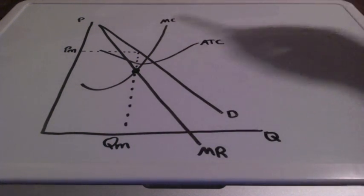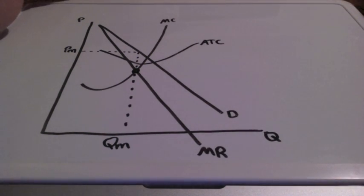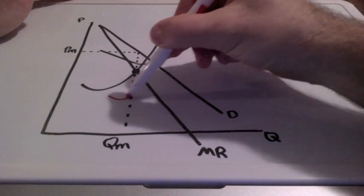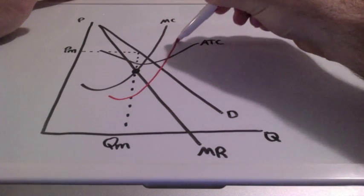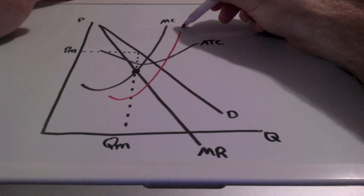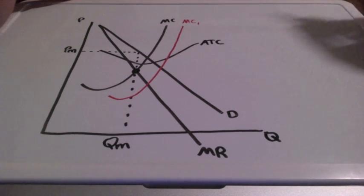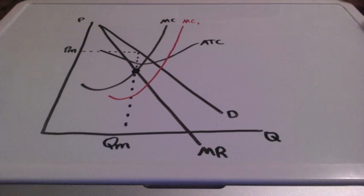And since the marginal cost curve represents the firm's supply curve, the marginal cost curve is going to shift to the right if the government is going to give this firm a per-unit subsidy.